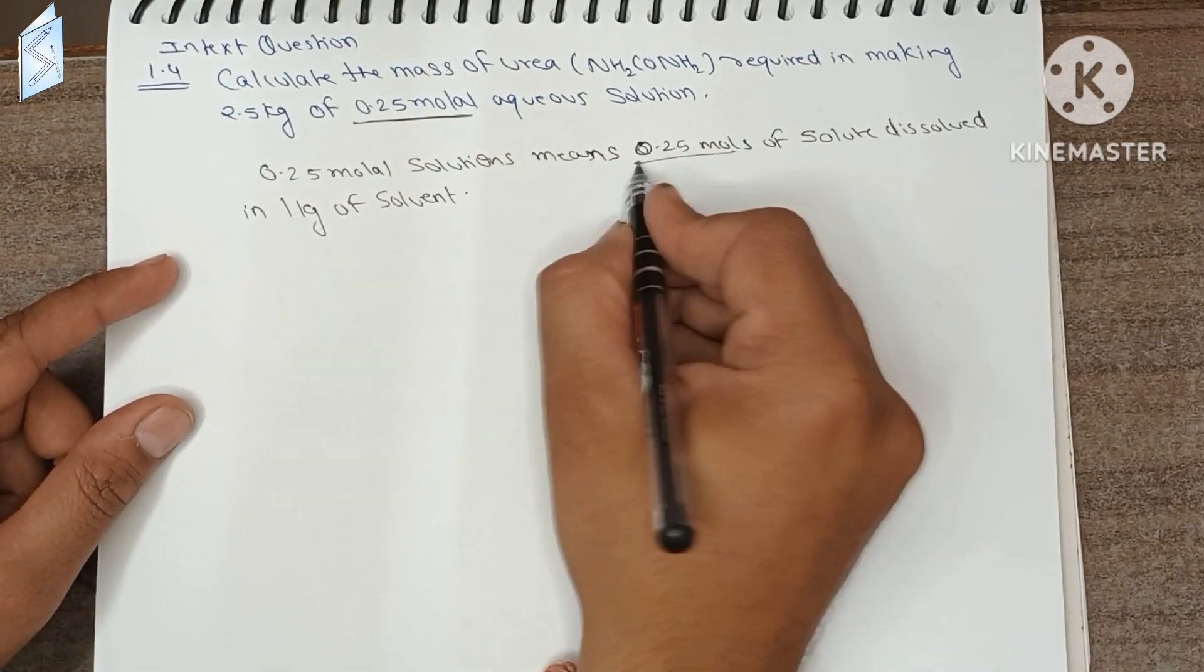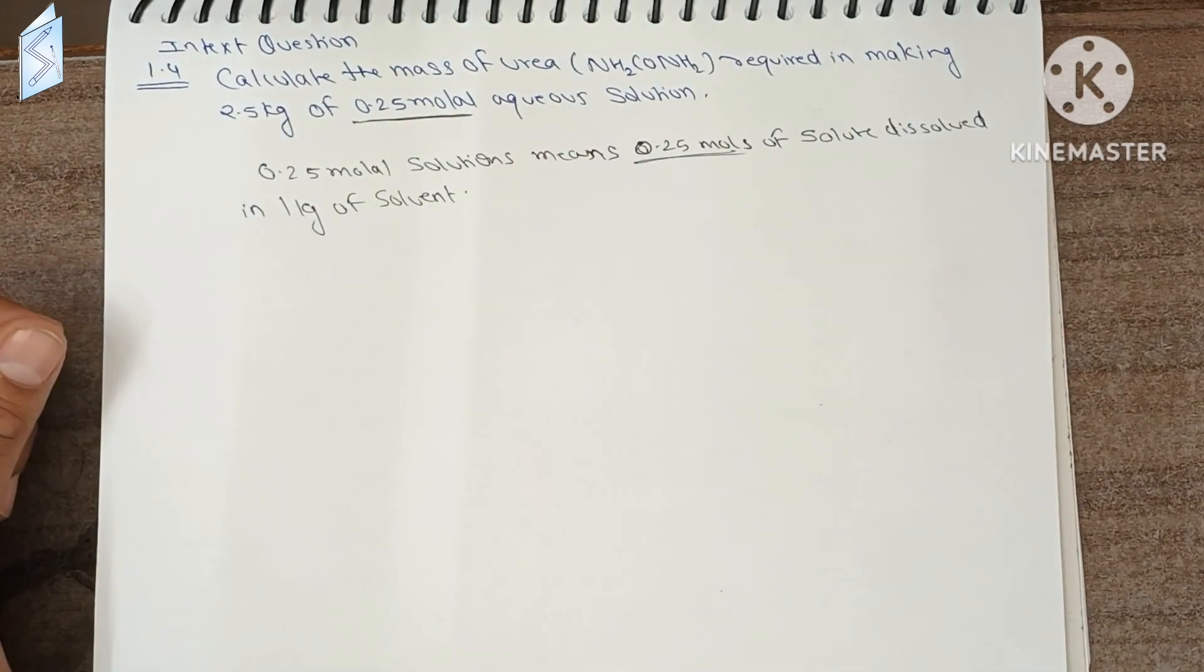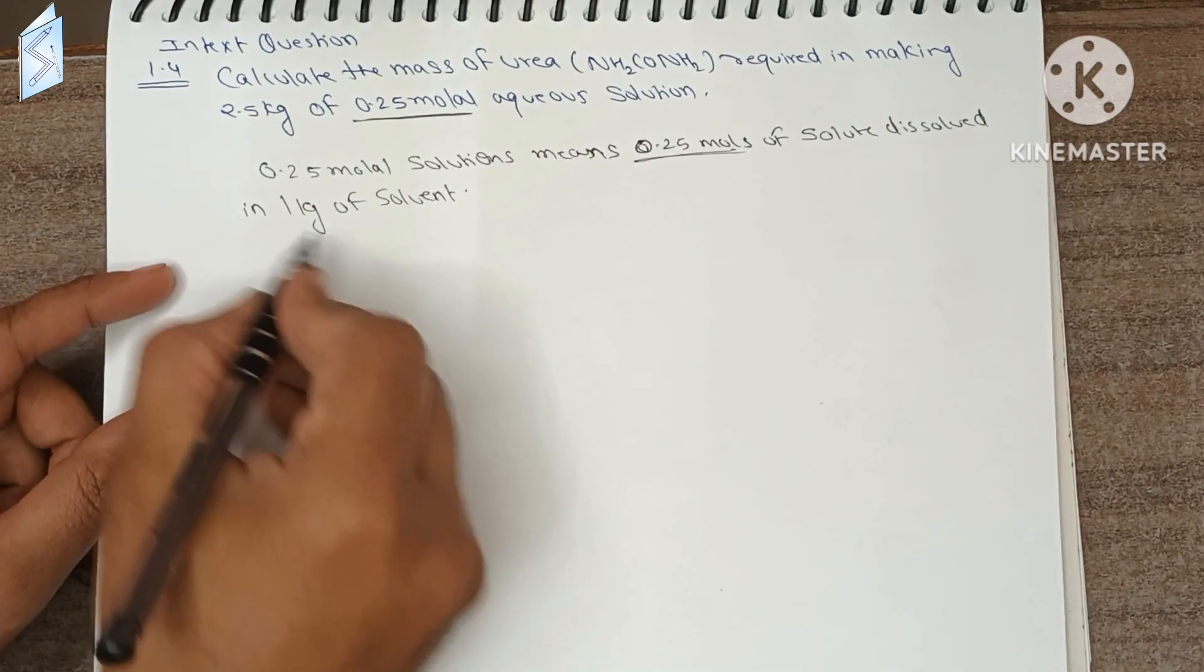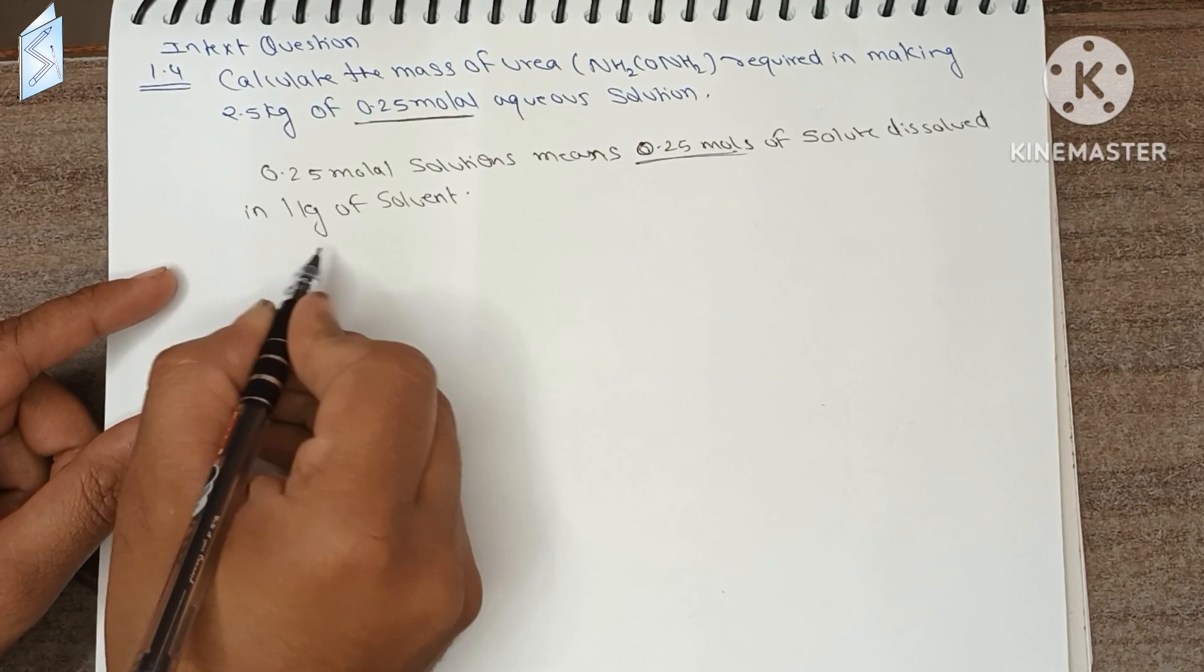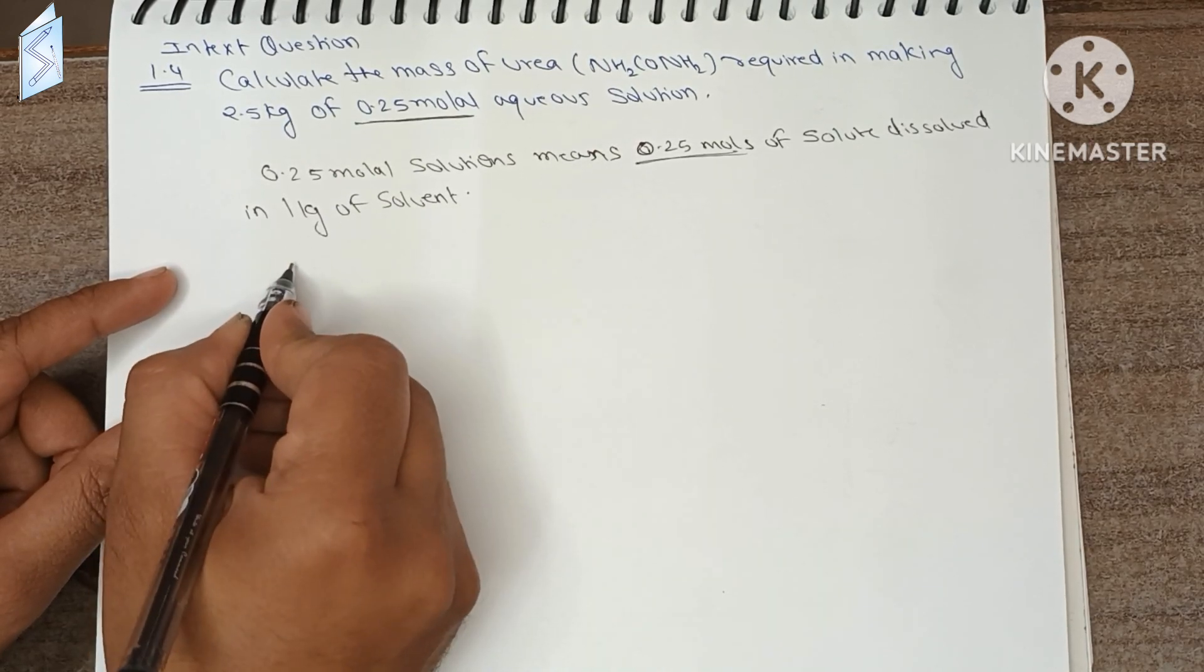So how many moles of urea are there? 0.25 mols. So 0.25 mols are urea's moles, so how much mass will it be?